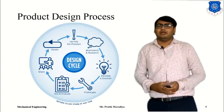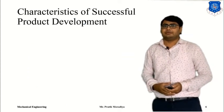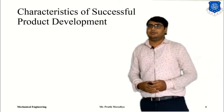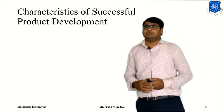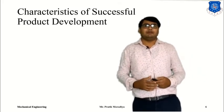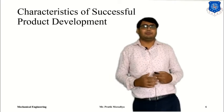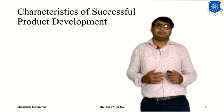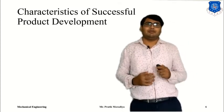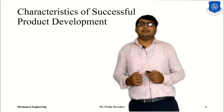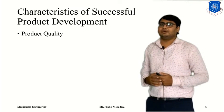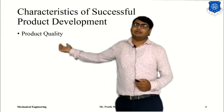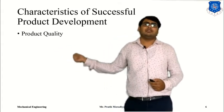If you want to look at the characteristics of successful product development — how we can say our product development was successful — there are mainly five criteria. The first criteria is product quality. If you are developing a product and its quality is not good, then your product development process was not a successful one, because ultimately customers will buy products that have high quality.